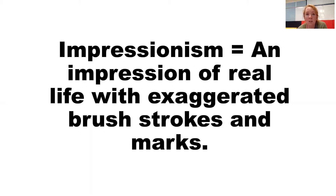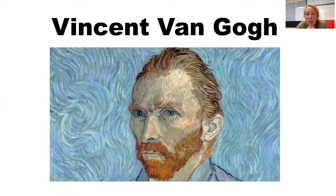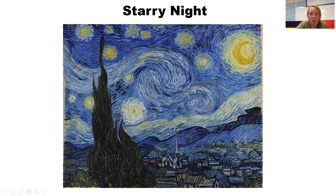A landscape is a picture of something that is outside — a scene that you see outside. We're going to do this in somewhat of an exaggerated style with lots of lines and big marks, which helps this fall under the category of impressionism. We took a quick look at the artist Vincent van Gogh and his portrait from last week, where you can see there are a number of lines.